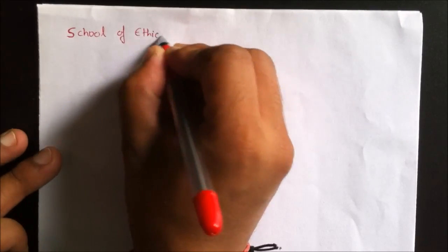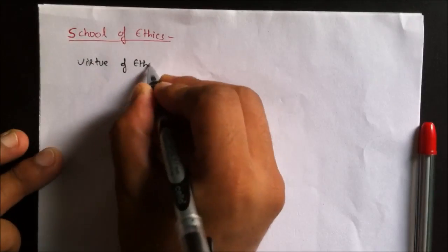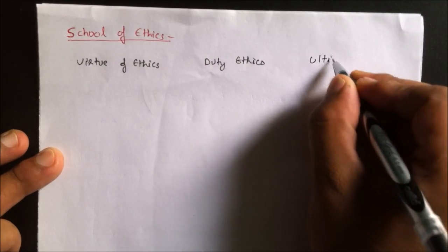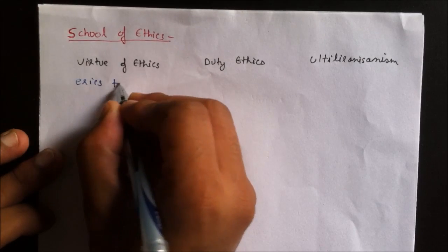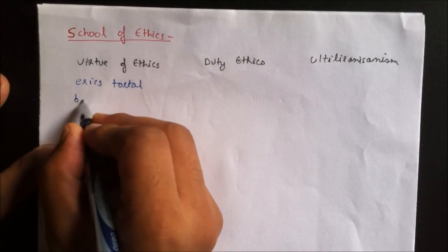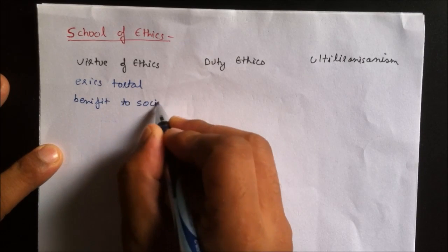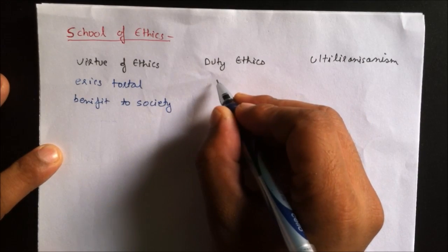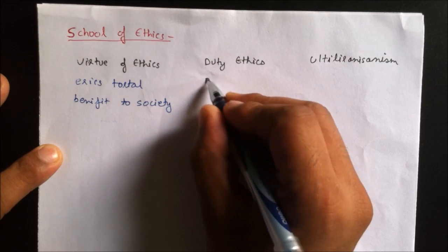Now here comes the School of Ethics. There are three types of schools: Virtue Ethics, Duty Ethics, and Utilitarianism. Virtue Ethics was discovered by Aristotle, which means you should always give benefit to the society, either in the form of charity, justice, or any other means.